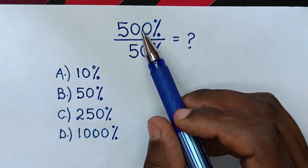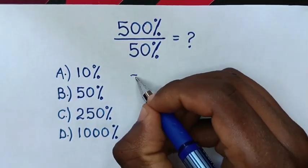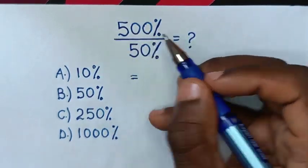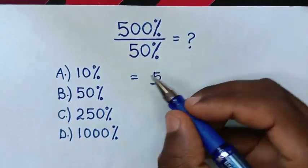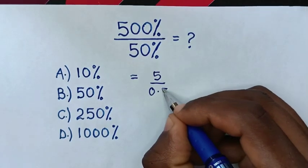So, first you convert both of these into decimal equivalents. Then, it will be equal to 500% - 500 divided by 100 is 5. Then, 50% - 50 divided by 100 is 0.5.